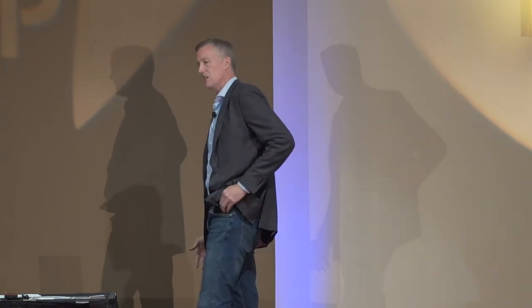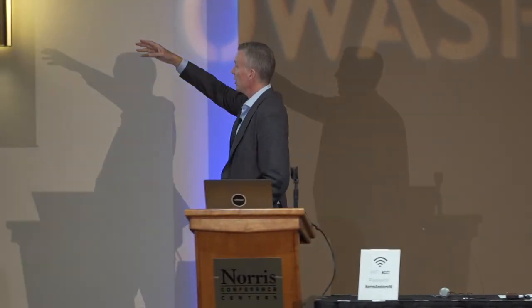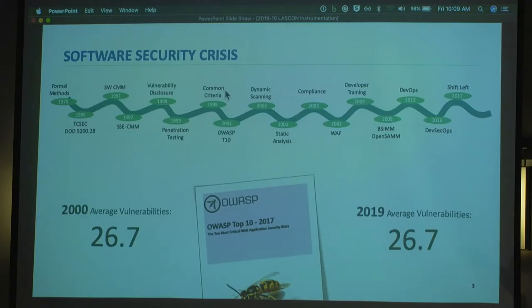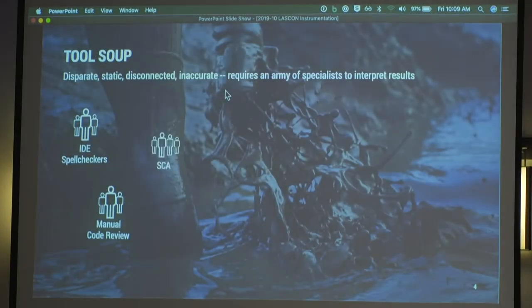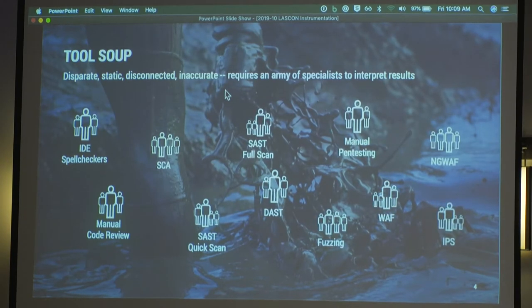Over the years I worked on the System Security Engineering CMM — a maturity model for building secure systems — didn't change much. I wrote the OWASP Top Ten in 2002, got a lot of awareness, didn't change a damn thing. The OWASP Top Ten today still has basically the same stuff it had in 2002. We've been through pen testing, code review, static analysis, WAFs, BSIMM, OpenSAMM, and now we're moving into DevSecOps. I'm not super optimistic about whether we're going to make a change, because nothing has really changed.